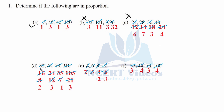Part d: 32 is to 48. Reducing: 16 to 32 and 24 to 48, further to 8 to 16 and 12 to 24, then 2 fours are 8 and 3 fours are 12, giving 2 is to 3.